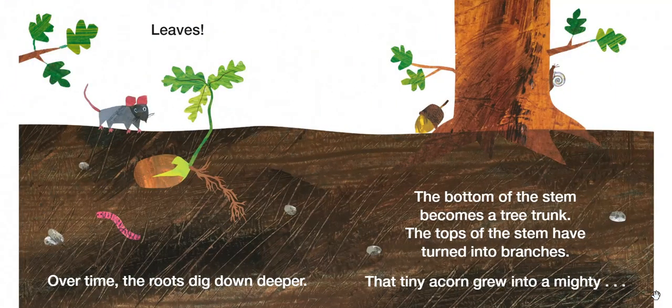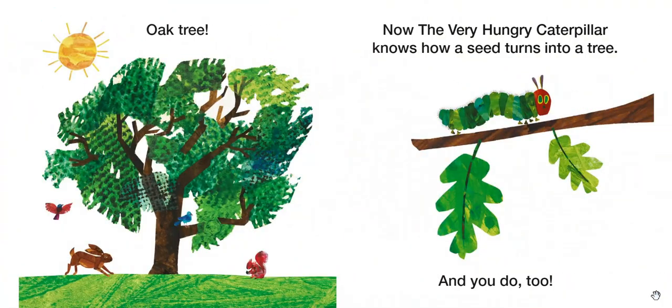Over time, the roots dig down deeper. The bottom of the stem becomes a tree trunk. The tops of the stem have turned into branches. That tiny acorn grew into a mighty oak tree. Now the Very Hungry Caterpillar knows how a seed turns into a tree. And you do too.